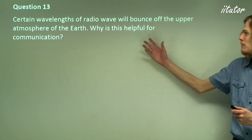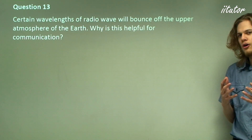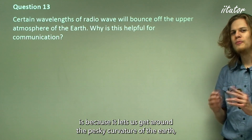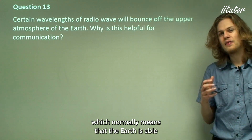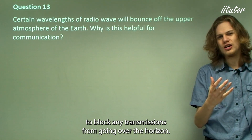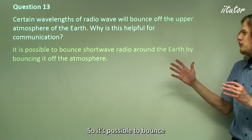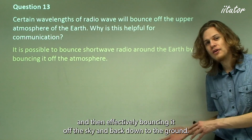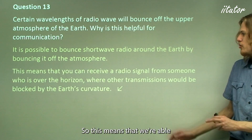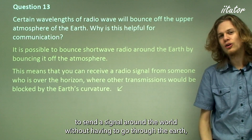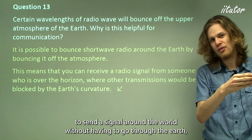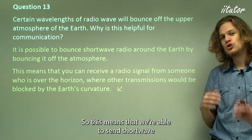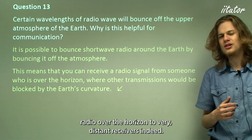Question 13: Certain wavelengths of radio wave will bounce off the upper atmosphere of the Earth. Why is this helpful for communication? The answer is because it lets us get around the curvature of the Earth, which would normally block transmissions from going over the horizon. By firing shortwave radio up at the sky and bouncing it off the ionosphere back down to the ground, we can send a signal around the world without it having to go through the Earth. This allows us to send shortwave radio over the horizon to very distant receivers.